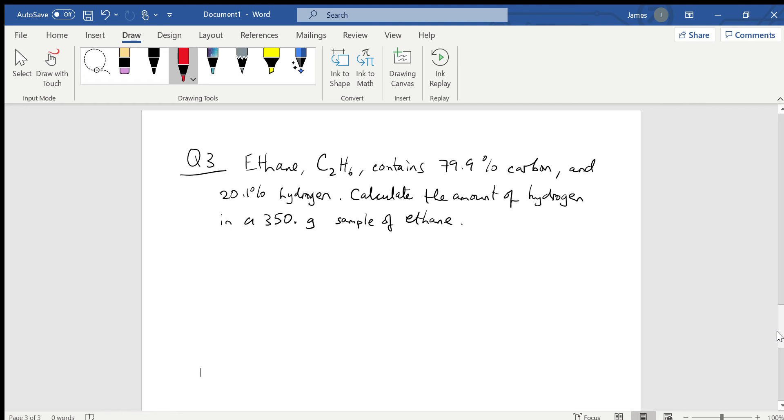This question reads: ethane, which has the formula C2H6, contains 79.9 percent carbon and 20.1 percent hydrogen. Calculate the amount of hydrogen in a 350 gram sample of ethane. When you see something like this, we know it's three sig figs. That dot is to tell you that all of these digits are significant.